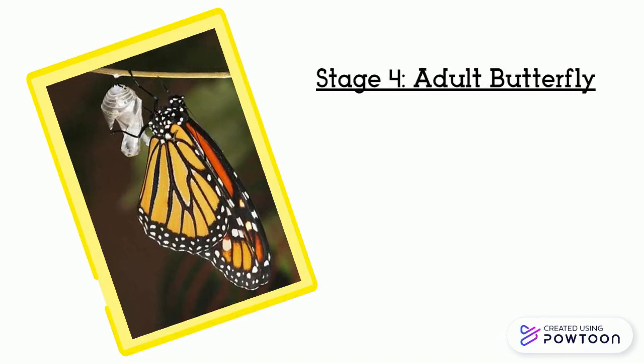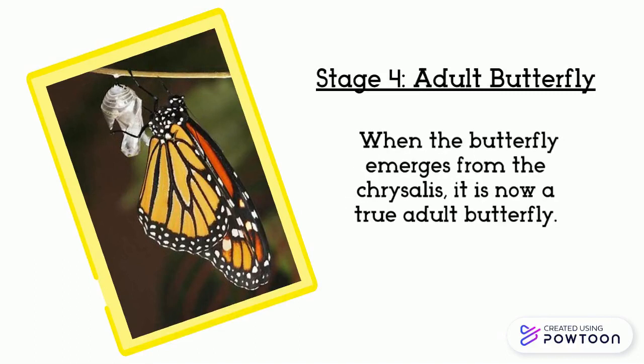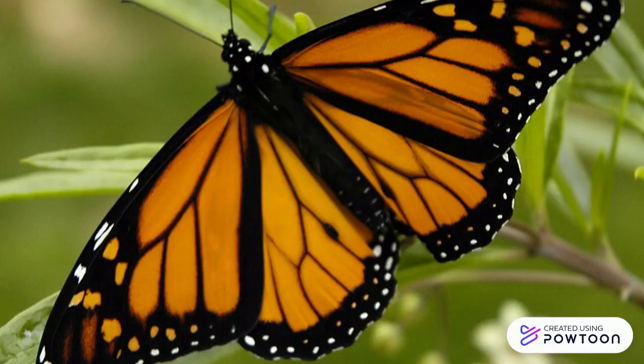We have reached the final stage — stage four: adult butterfly. When the butterfly emerges from the chrysalis, it is now a true adult. After going through all four steps, we now officially have an adult butterfly.